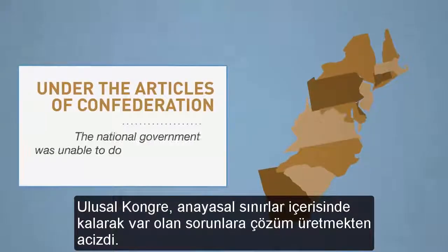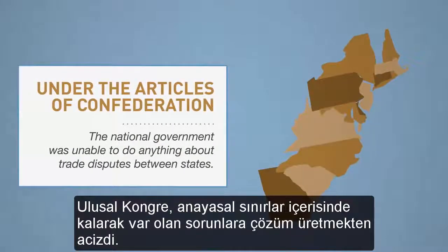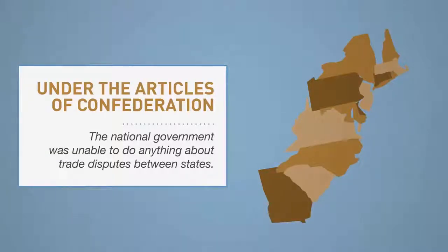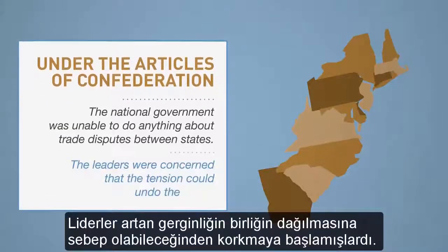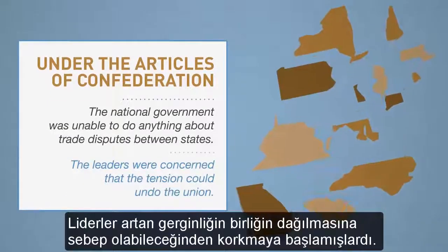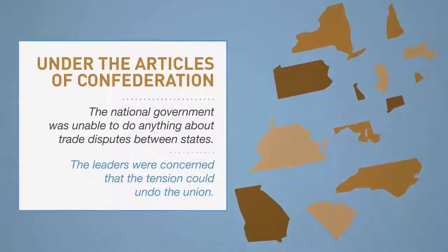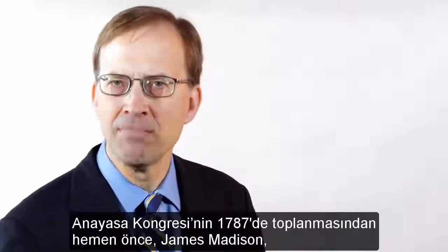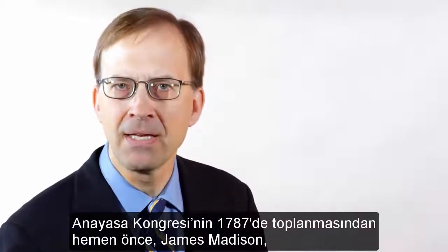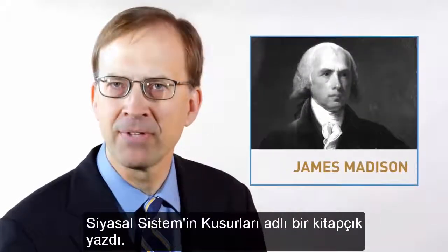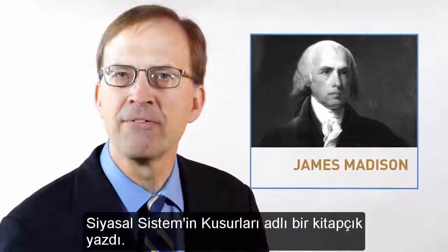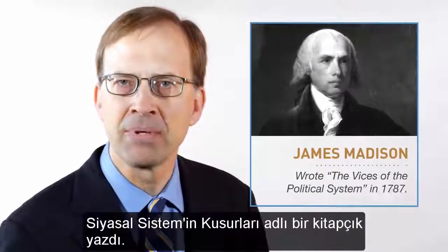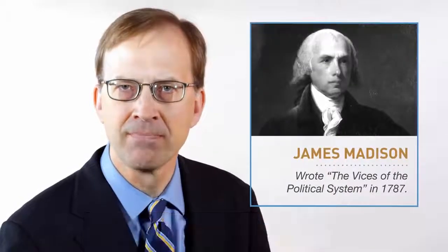The national government, under the Articles, could not do anything about these problems. Leaders became concerned that the tension could undo the Union. Just before the Constitutional Convention met in 1787, James Madison wrote a pamphlet called The Vices of the Political System.